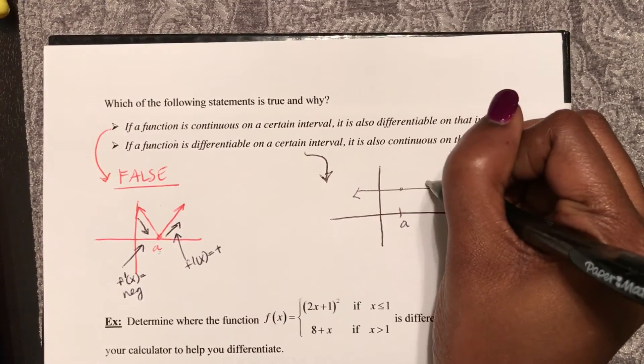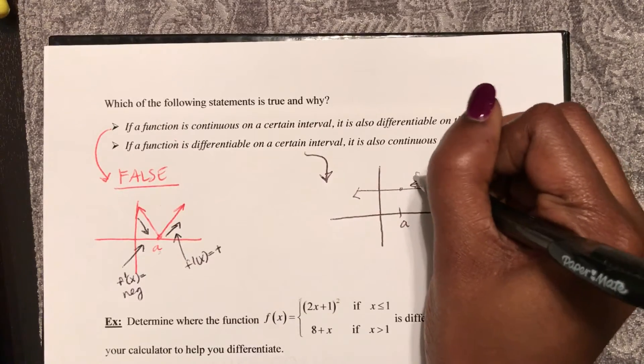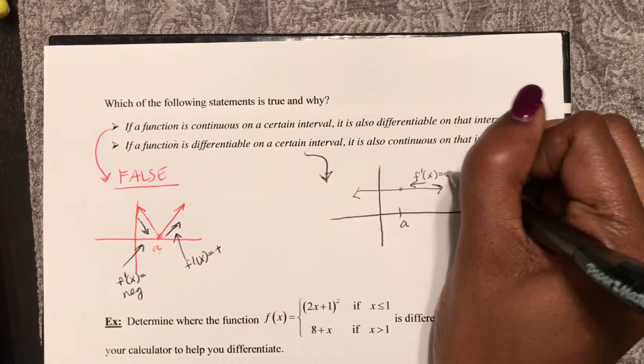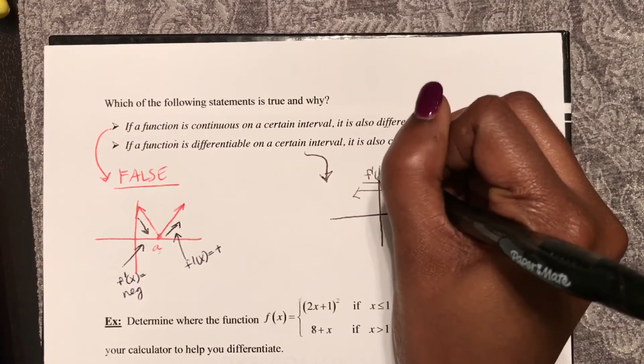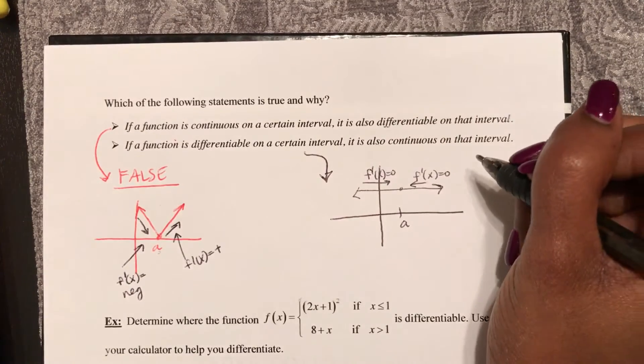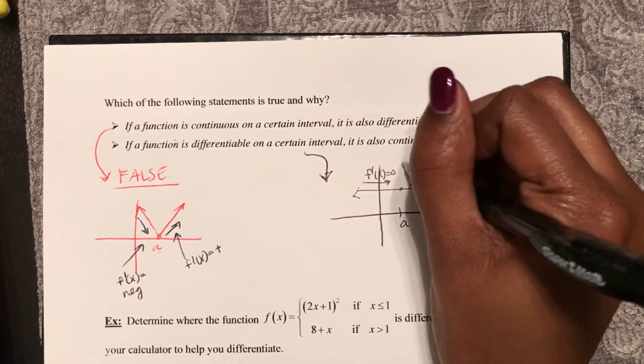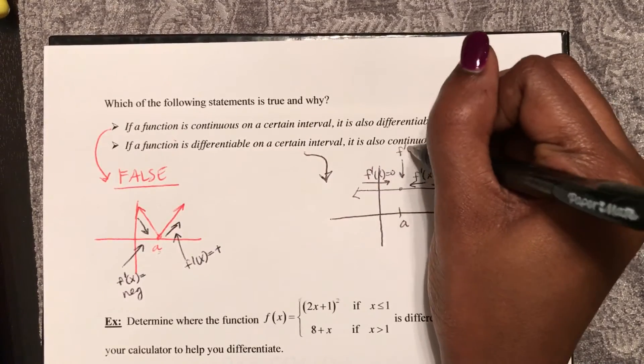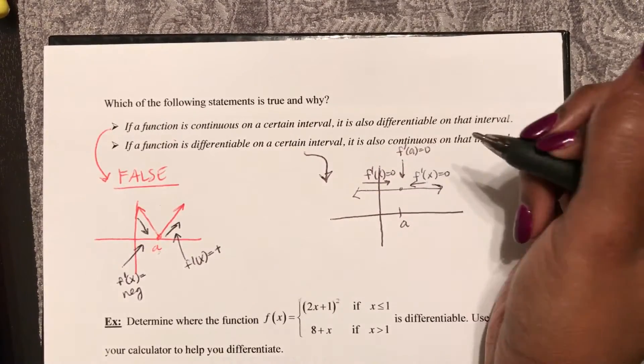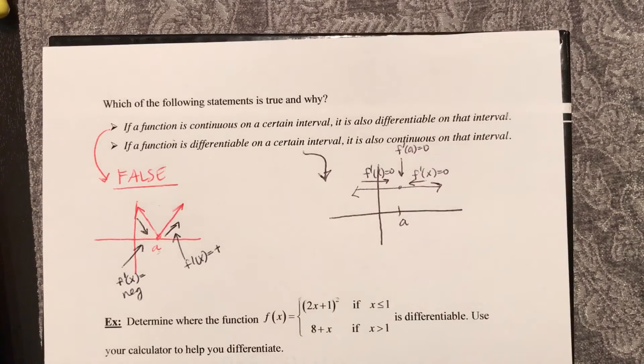Here from this side, f prime of x equals zero. From this side, f prime of x equals zero. So therefore at this point, f prime of a is also going to equal zero.